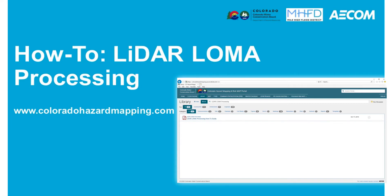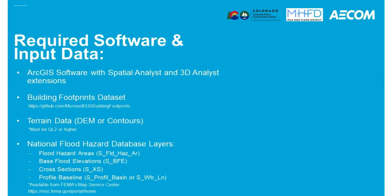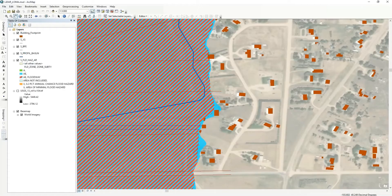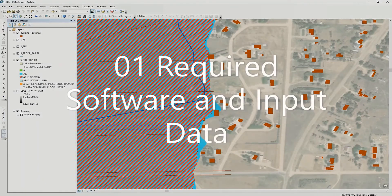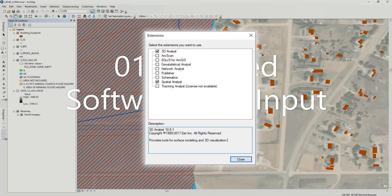This can be an area as small as a cul-de-sac affected by a portion of a stream, or as big as an entire town affected by multiple streams. See the list below as well as the written guide to identify the data needed to perform this LiDAR LOMA analysis. Please keep in mind that the DEM resolution required to complete this process should be QL2 or higher. Before getting started, make sure you have a copy of ArcGIS software with the Spatial Analyst and 3D Analyst extensions enabled.